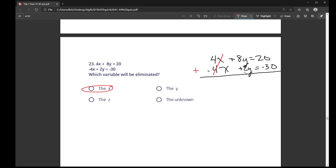And the 8y plus 2y, that would make 10y. So do you see how the y's aren't going away? So in this case, they're just asking, when I add the two equations together, which variable goes away? And in this case, it's the x.